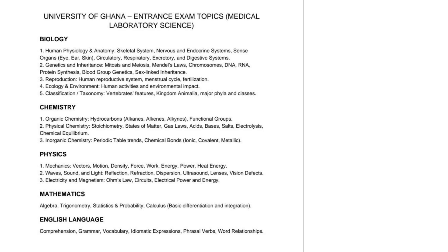You are also supposed to look at reproduction: male and female reproductive systems, the menstrual cycle and fertilization process. Also study ecology and environment, including the impact of human activities on the environment — that is pollution, diseases and deforestation. Look at classification and taxonomy, the major characteristics of vertebrates — mammals, birds, reptiles, amphibians and fish — and Kingdom Animalia, covering key phyla, orders and classes.